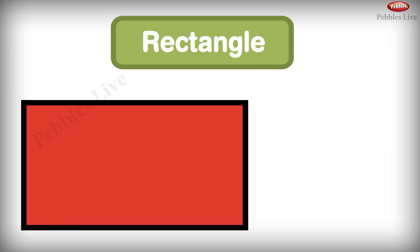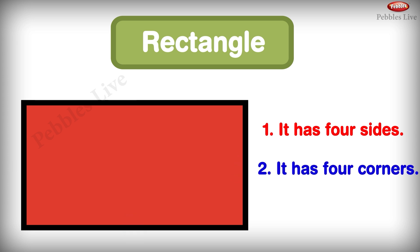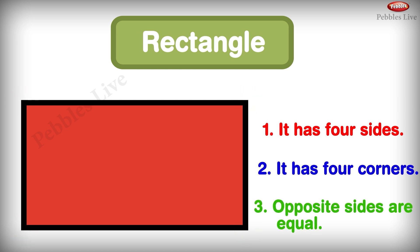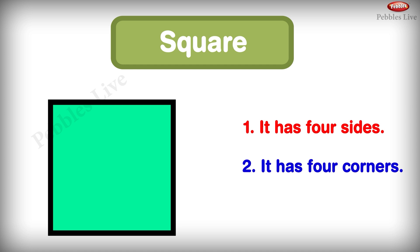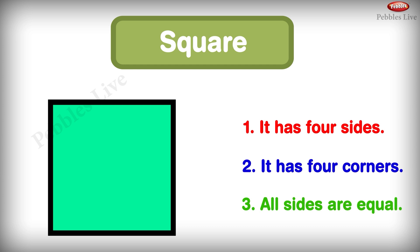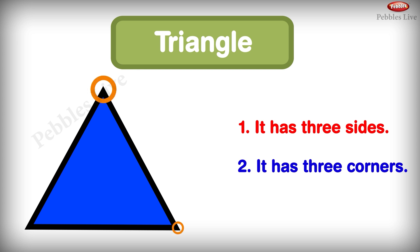Rectangle: it has 4 sides and 4 corners, and opposite sides are equal. Square: it has 4 sides and 4 corners, and all sides are equal. Triangle: it has 3 sides and 3 corners.